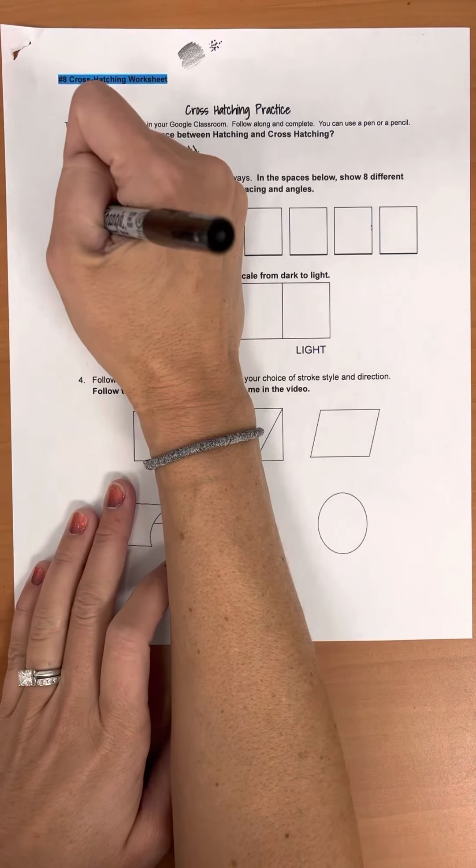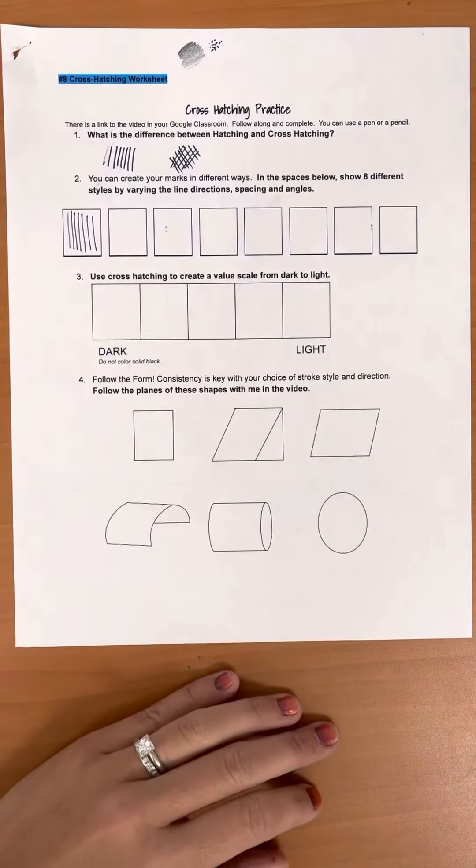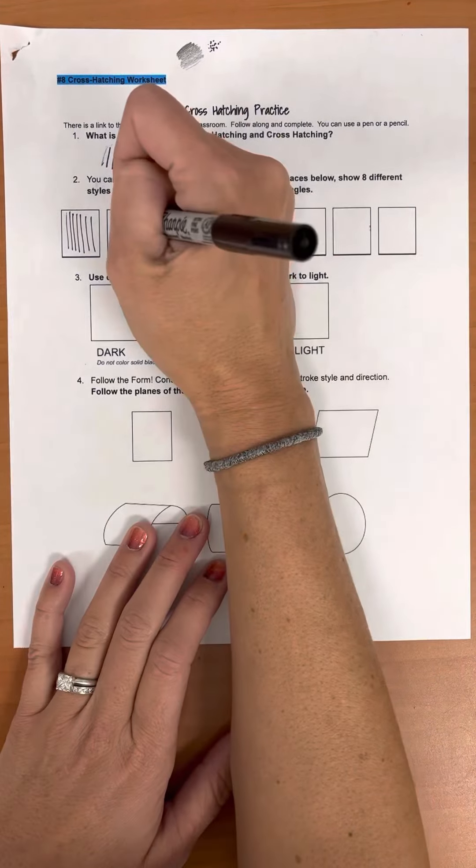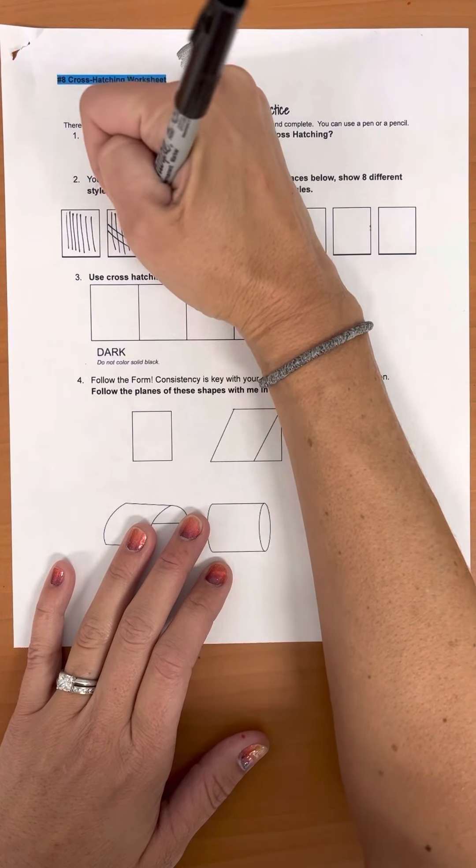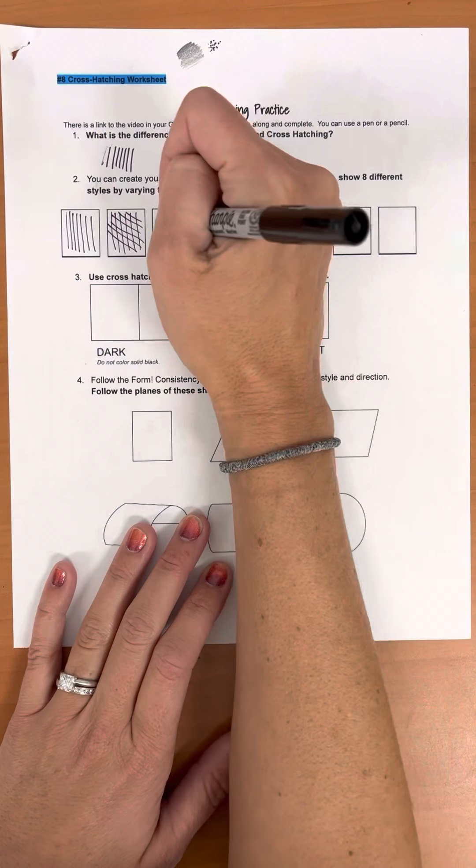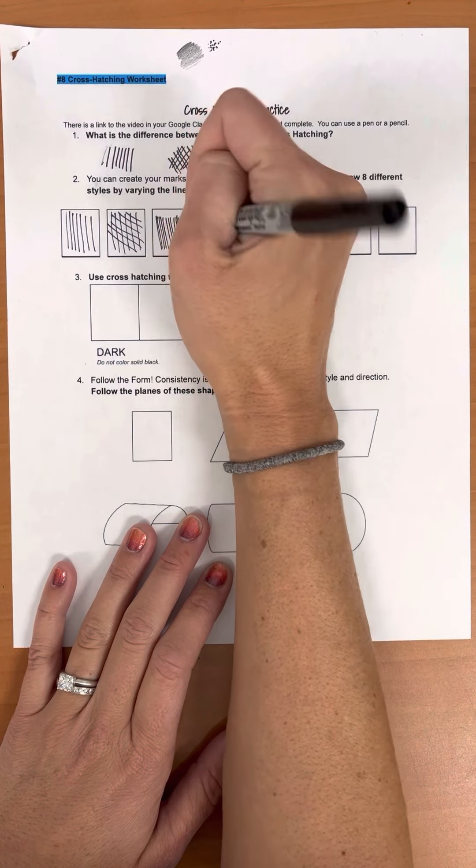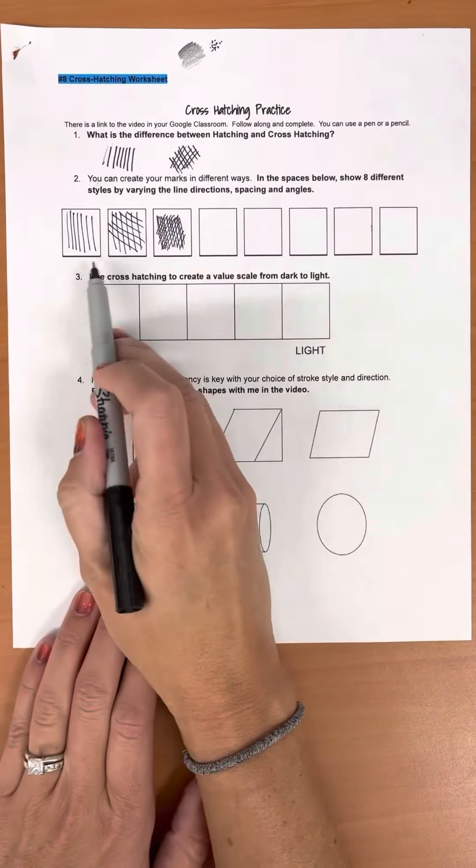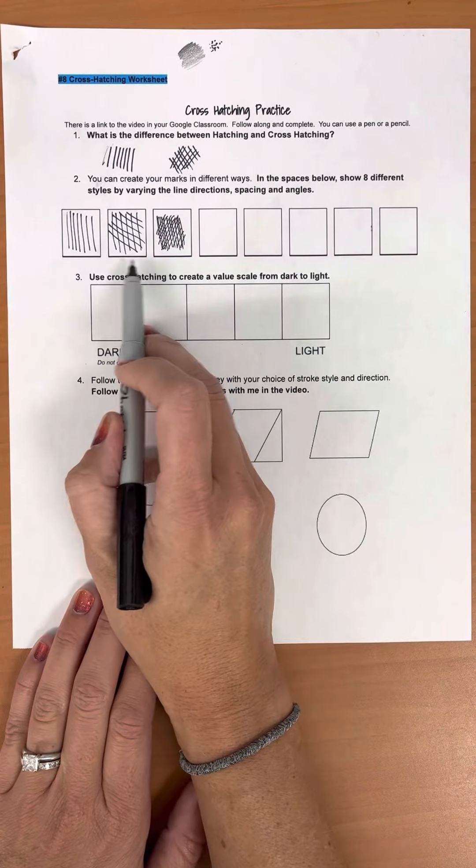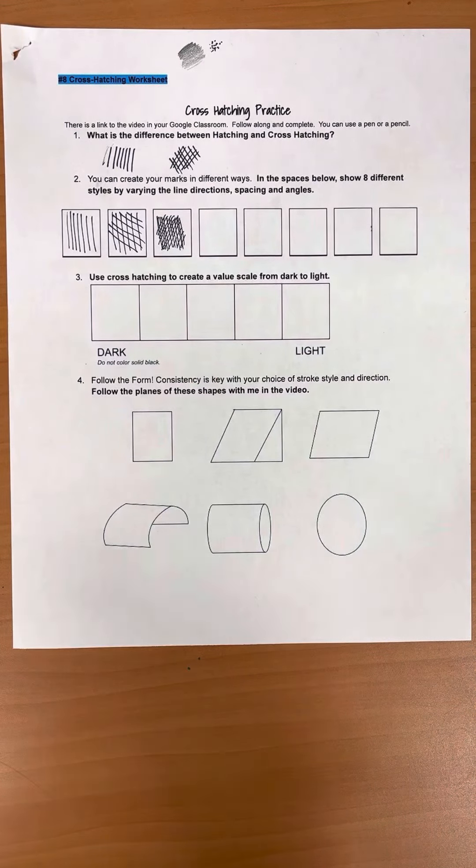You could very simply fill vertical lines. You could create vertical lines that cross from left to right. You could create vertical lines that are more tight and they cross from that direction. All of these are examples of hatching and cross hatching, but they give you a different value and they also give you a very different feel.